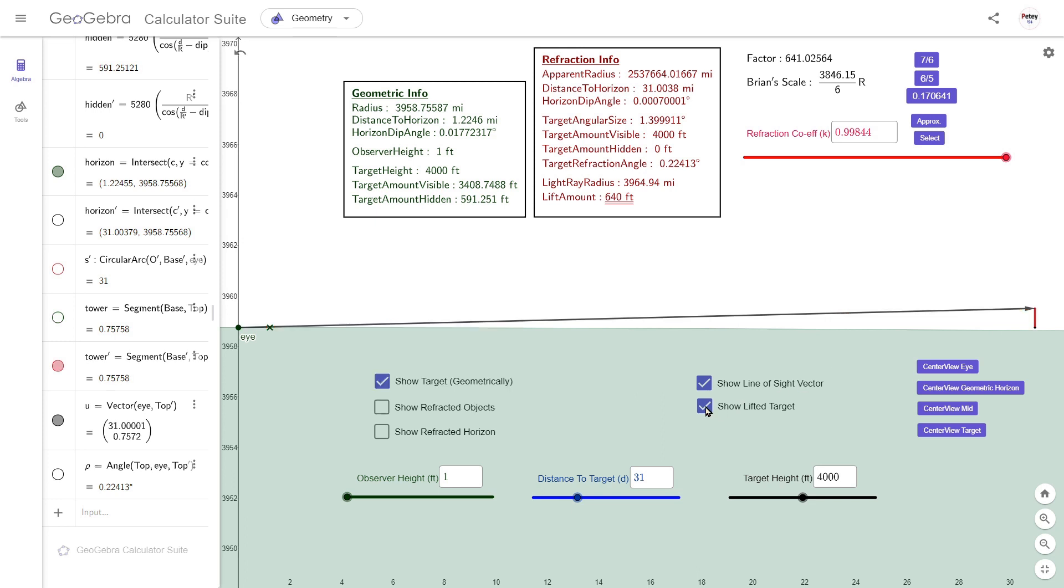And that's here. And under these settings, the target appears to be lifted about 640 feet. And this lift might be enough to make a target visible that ordinarily would be obstructed by the curve of the Earth or a nearby hill.